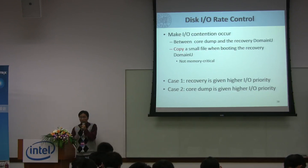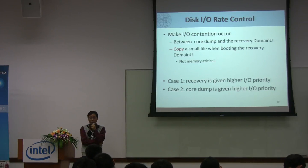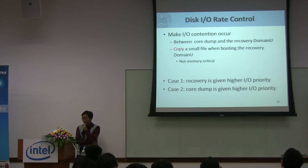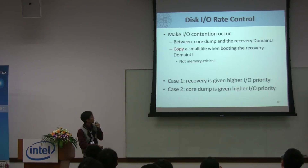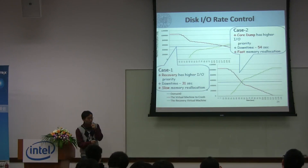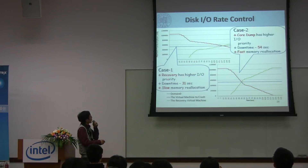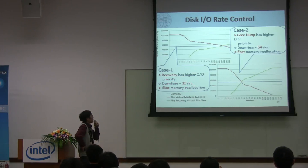So we started two cases. In the first case, the recovery virtual machine is given higher CPU priority. In the second case, the crash dump is given much higher CPU priority. For case one, we can see that if the recovery VM has higher CPU priority, the downtime is around 31 seconds.